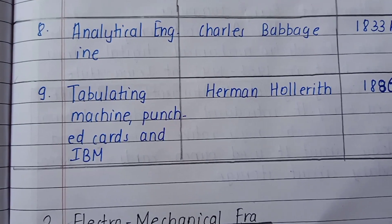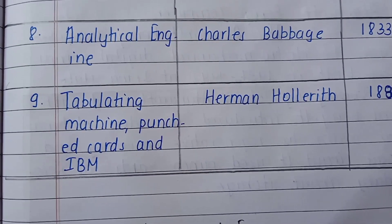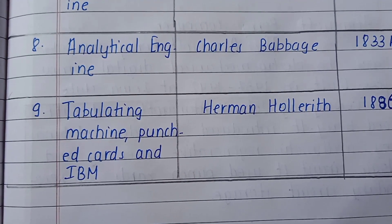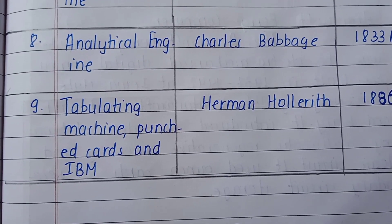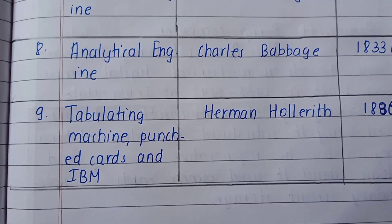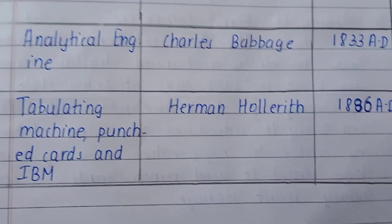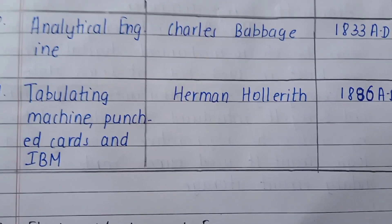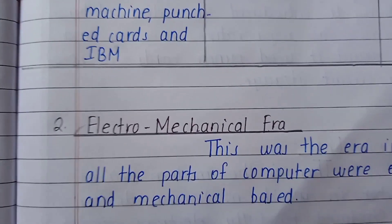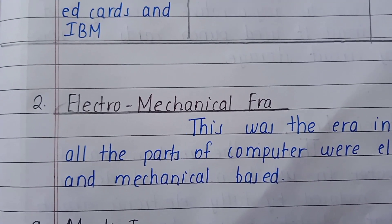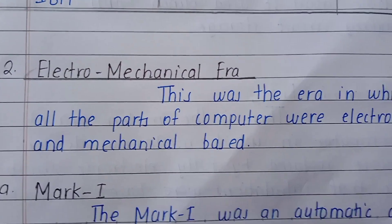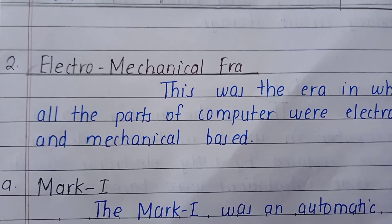The last device from the mechanical era was the Tabulating Machine, Punch Card, and IBM system, developed by Herman Hollerith in 1886 AD. Moving on to the electromechanical era — this was the era in which all parts of the computer were electronic and mechanical based.